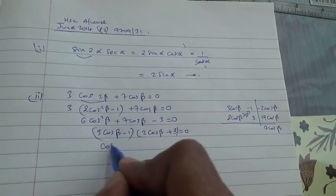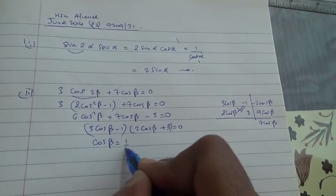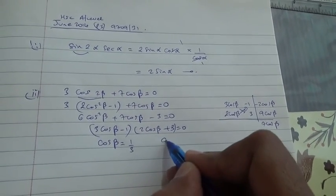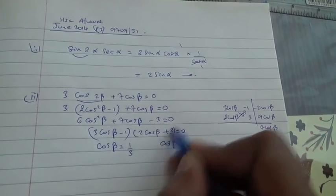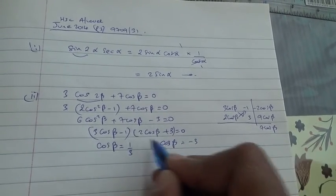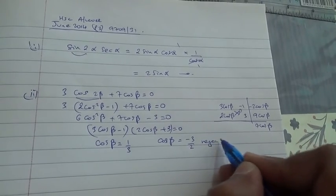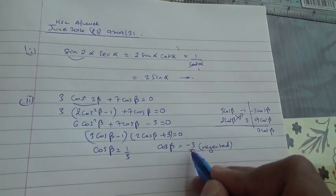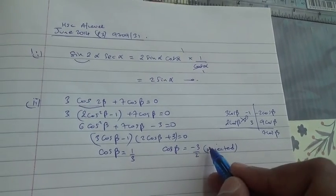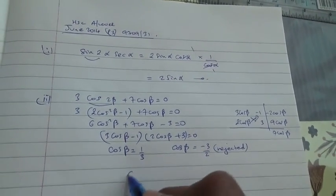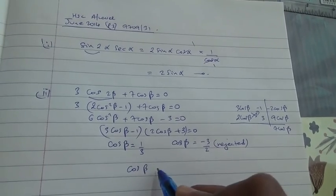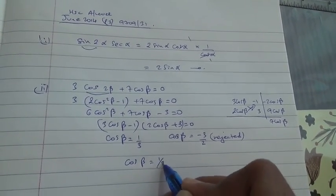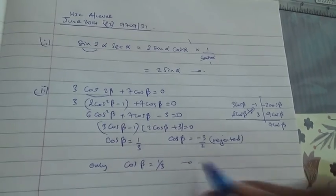So what is this? This is cos of beta is equal to 1 third, and this one is cos of beta. You send the 3 on the other side becomes minus 3, and the 2 cos divide. Alright, this one is rejected. Because cos of beta cannot be a negative number that is bigger than 1. So this one is accepted. And we have been told to find the exact value of cos beta. Therefore, the only value is this one. Here we are for question number 1.